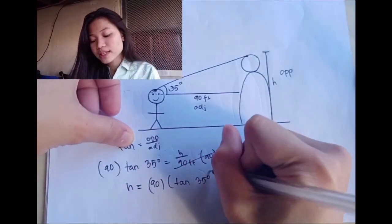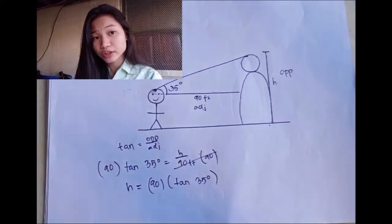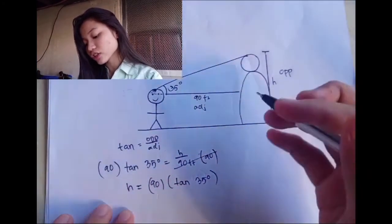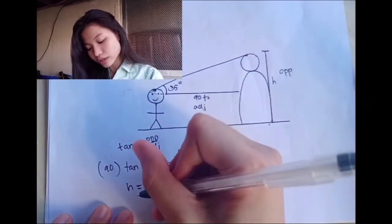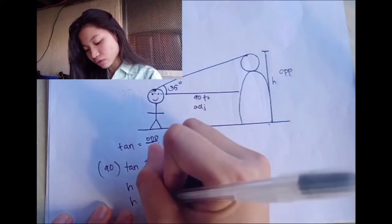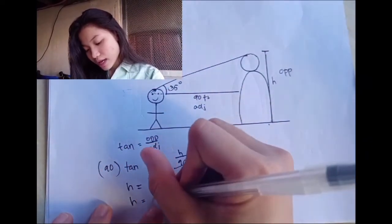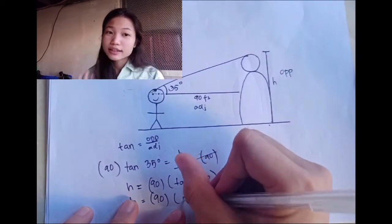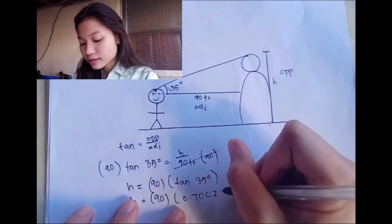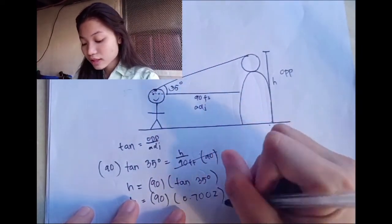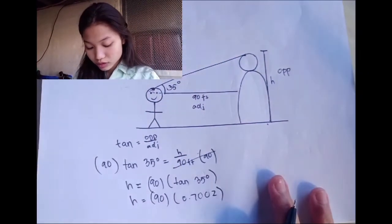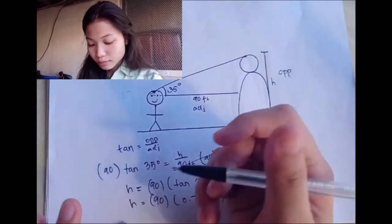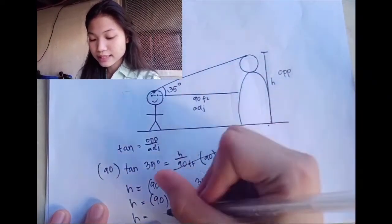Using a calculator, tangent 35 degrees is equal to 0.7002. Multiplying the two values, H is equal to 63.018 feet.